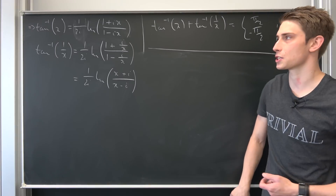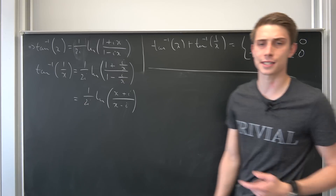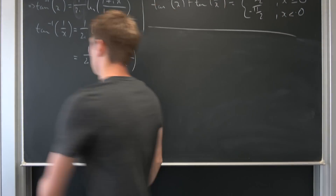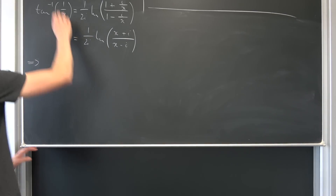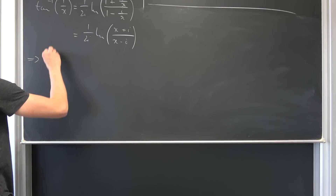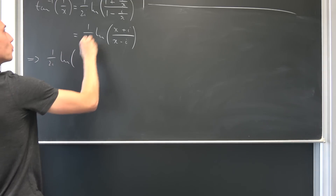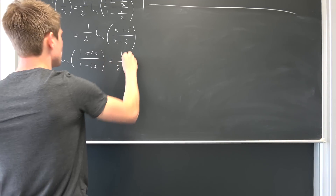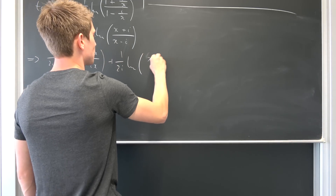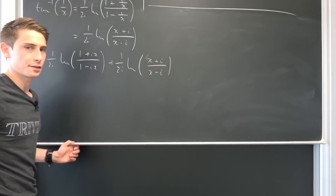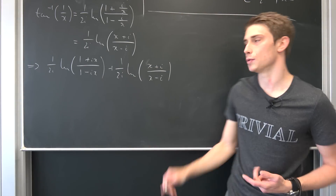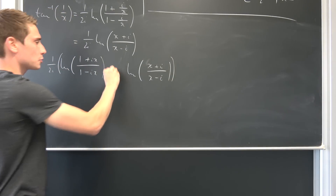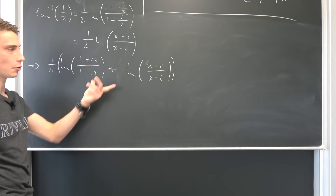The first case is when x > 0. We now add the two expressions: 1/(2i)·ln((1 + ix)/(1 − ix)) plus 1/(2i)·ln((x + i)/(x − i)). We can factor out 1/(2i) on both terms and use the log property to turn this addition into multiplication of the arguments.